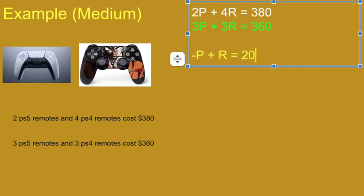Negative 1P plus 1R equals 20 bucks. That's telling me that the difference between the two remotes is 20 bucks. How did I do that? 2 minus 3 is negative 1, 4 minus 3 is 1, 380 minus 360 is 20.